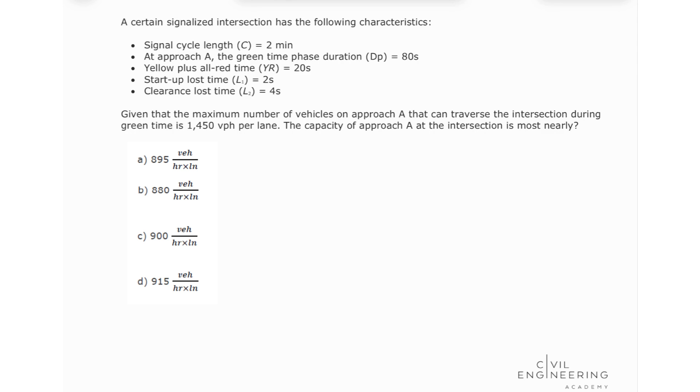A certain signalized intersection has the following characteristics. Signal cycle length C equals 2 minutes. At approach A, the green time phase duration Dp equals 80 seconds. Yellow plus all red time equals 20 seconds. Startup loss time L1 equals 2 seconds. Clearance loss time L2 equals 4 seconds.